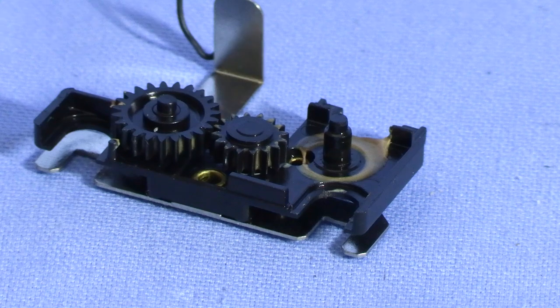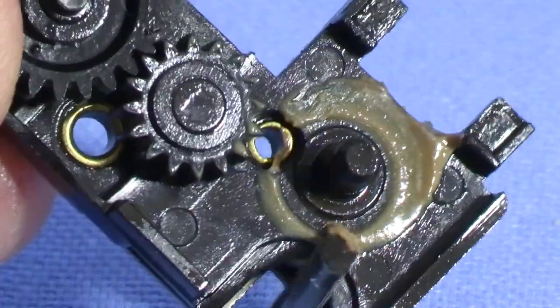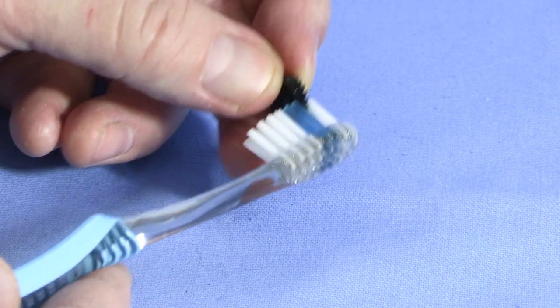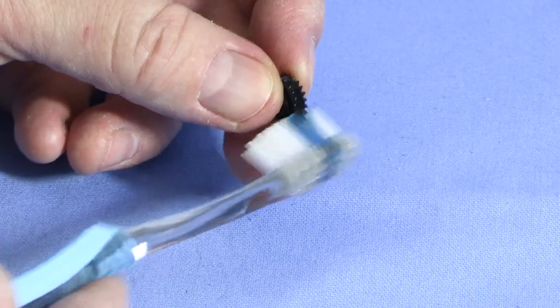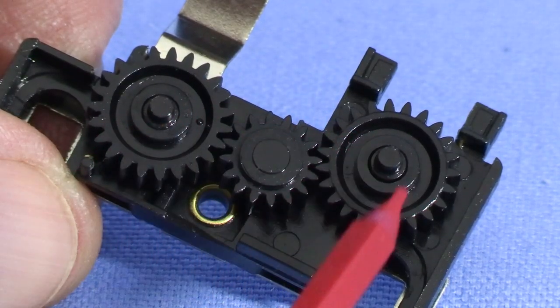Now I can turn my attention to the gearboxes. As you can see, there's quite a bit of crud in there. I'll use the same techniques to scrape, wipe, and swab the parts until they're clean. An old toothbrush also works well for this job. Now that the gearbox is clean, it's ready to be re-lubricated and reassembled. The two larger gears are interchangeable.